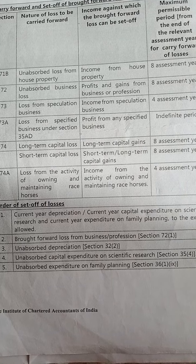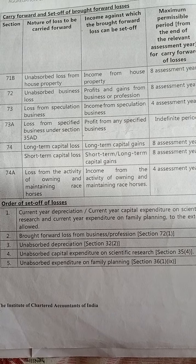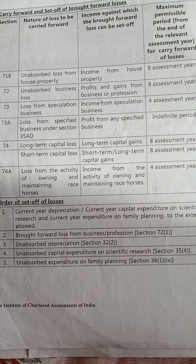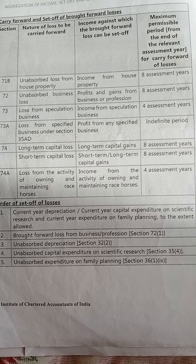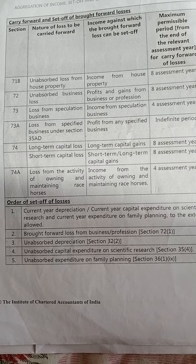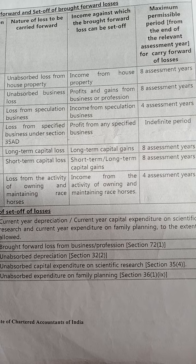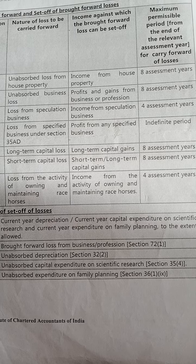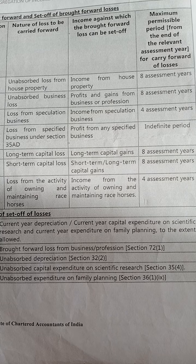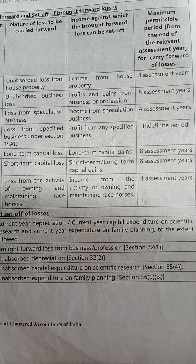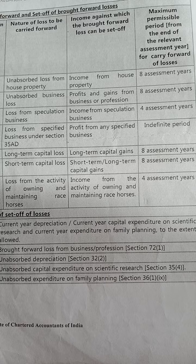Under Section 73, loss from speculation business will be set off against income from speculation business only, and the maximum permissible period is four years. Under Section 73A, if there is a loss from specified business, it will be set off against profit from any specified business, but there is no limit on the carry forward period — it can be carried forward indefinitely. Under Section 74, long-term capital loss will be set off against long-term capital gains only, with a maximum of eight years. Short-term capital loss can be set off against both short-term and long-term capital gains, also with a maximum of eight years.